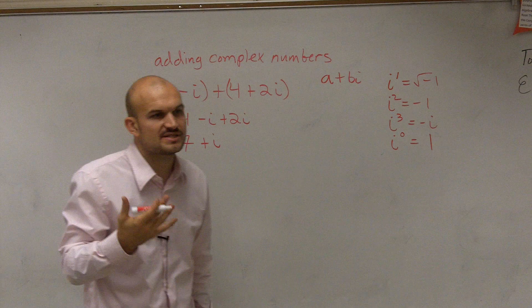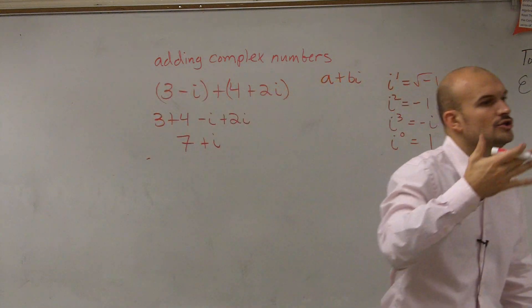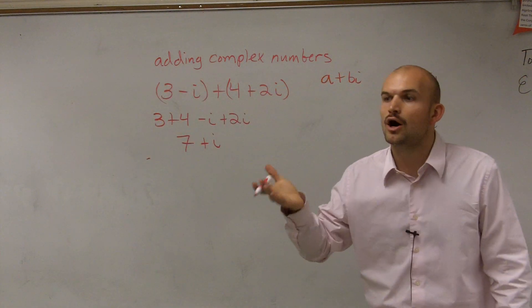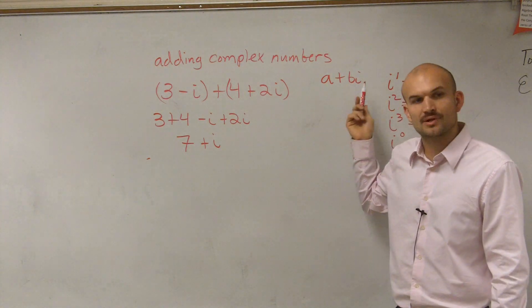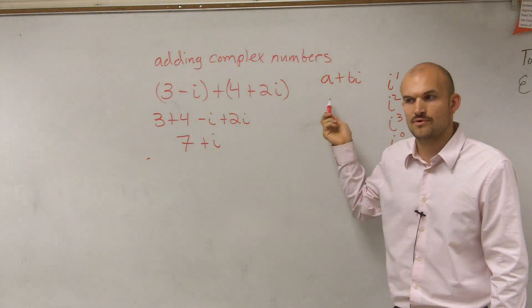And make sure whenever you simplify complex numbers, you always write it in the form of a plus bi, so it's in complex form.